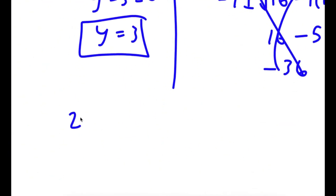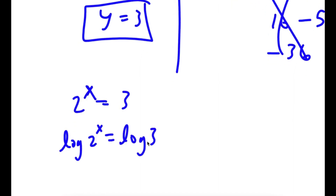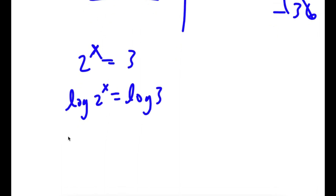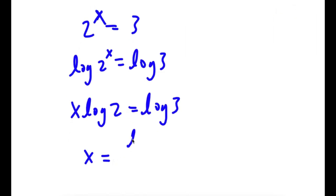Remember how we let 2 to the power of x equal y — meaning 2 to the power of x equals 3. To solve this, I'm going to take the log on both sides. This is the same thing as x times log 2 is equal to log 3, meaning x is equal to log 3 over log 2.